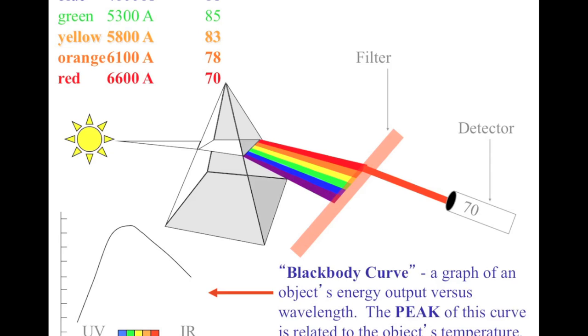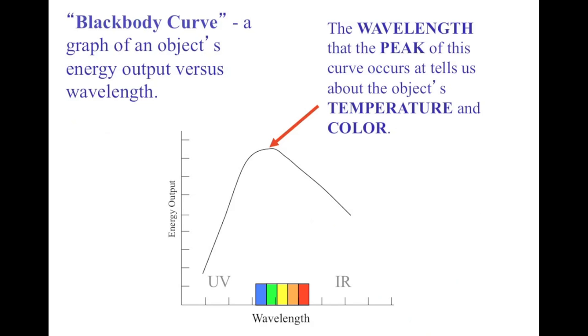The peak of the curve is related to the object's temperature. How is it related? The peak above the wavelength axis tells you how hot or cool an object is at its surface. The hotter an object is, the shorter the wavelength of that peak will be.